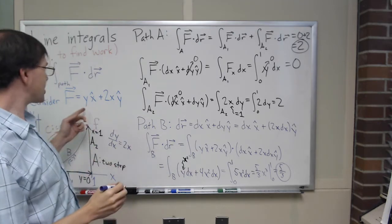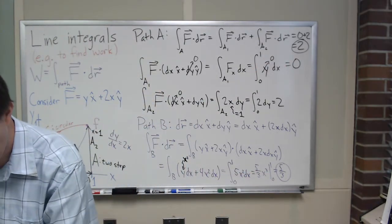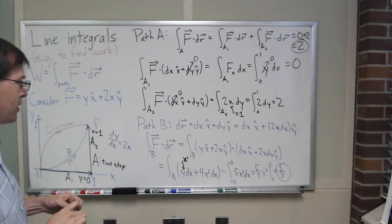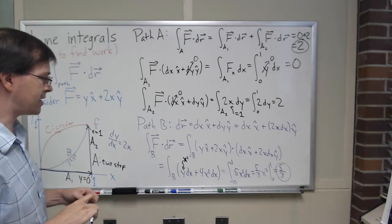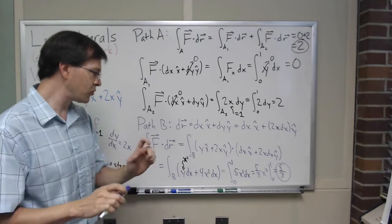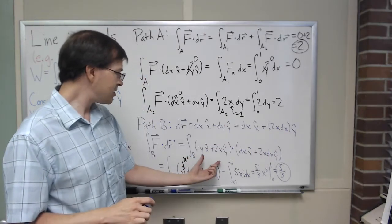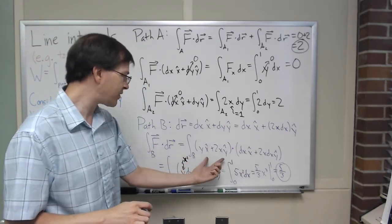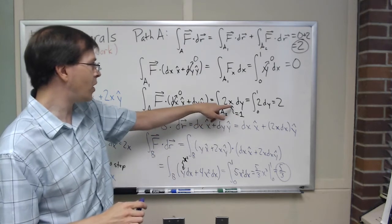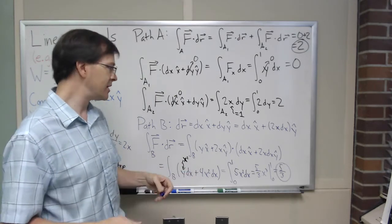Notice these results are different — for this force, the path matters. Following path A gave an integral of 2, and following path B gives 5/3. The crucial steps were: first, writing the dr vector in terms of dx and dy; second, doing the dot product of force dot dr to get an integral I can evaluate; and finally, plugging in what I knew — for path A1 I plugged in y equals zero, for path B I plugged in y equals x squared — so everything is in terms of the variable of integration.